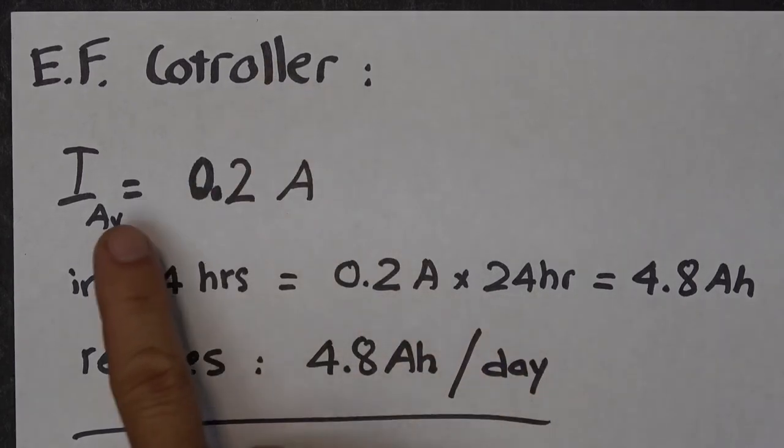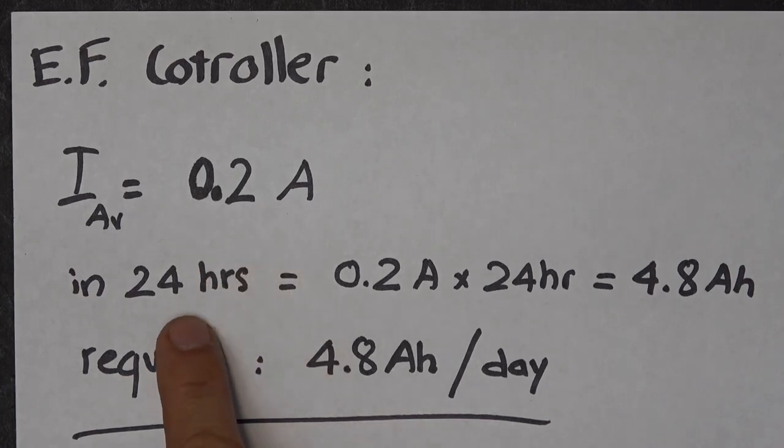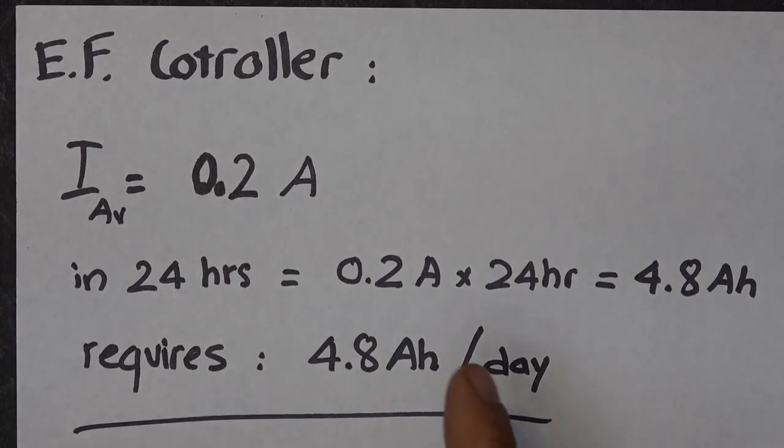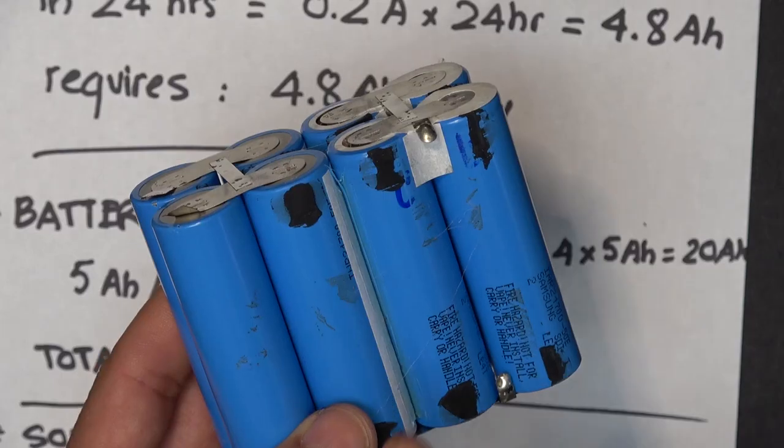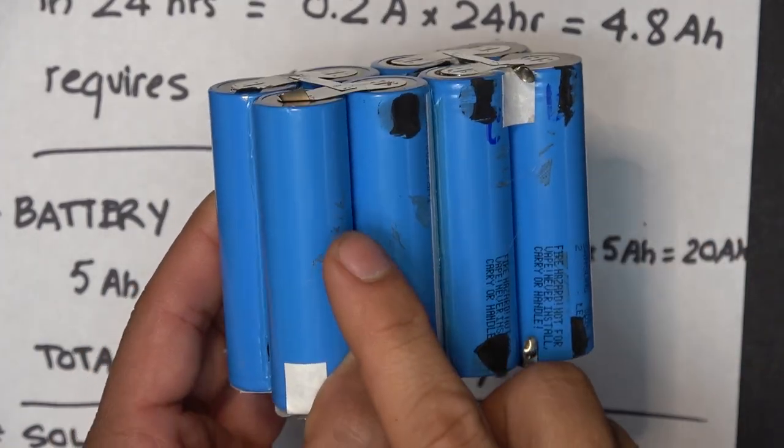Now let's do some calculations. The controller requires an average of 0.2 amps, so in 24 hours it will consume 4.8 amp hours. That means the battery needs to be at least 4.8 amp hours to power it within 24 hours.